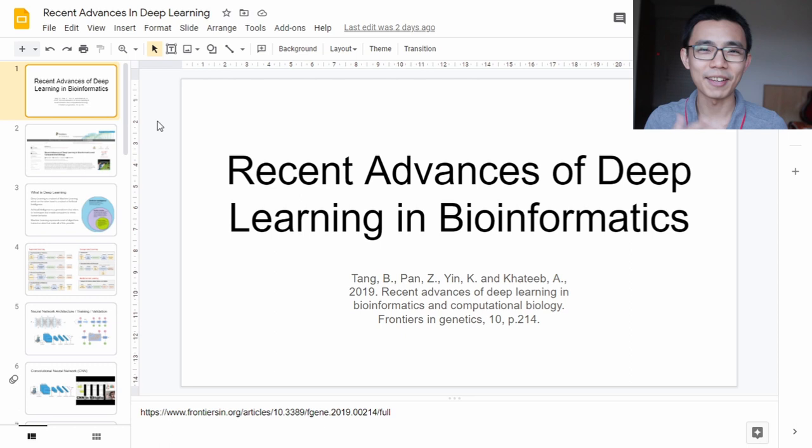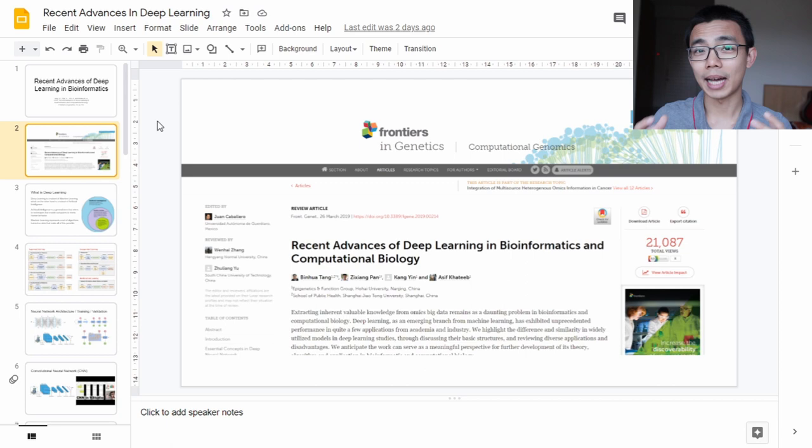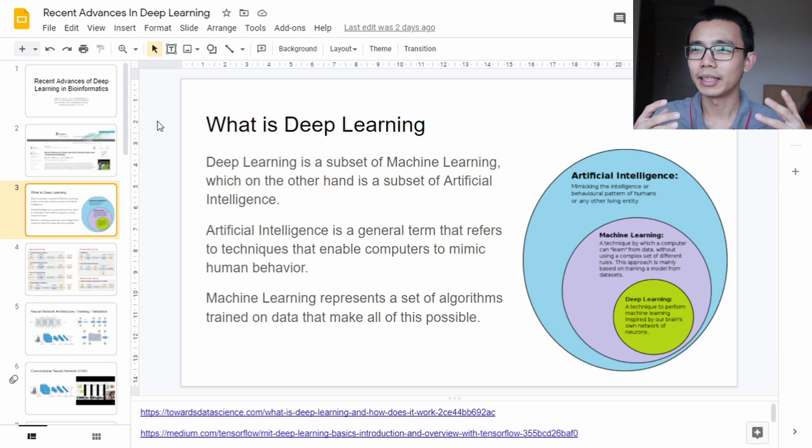Good afternoon everyone, welcome to LiquidBrain. So today I want to talk about some recent advancements of deep learning in the field of bioinformatics. The flow of the paper is mostly based on the paper I found in Frontiers in Genetics titled Recent Advances of Deep Learning in Bioinformatics and Computational Biology by Tang et al. in 2019. But of course I've added some extra material that I find is relevant for the explanation of neural network deep learning, as well as how certain neural network architectures are structured and applied in the field of bioinformatics.